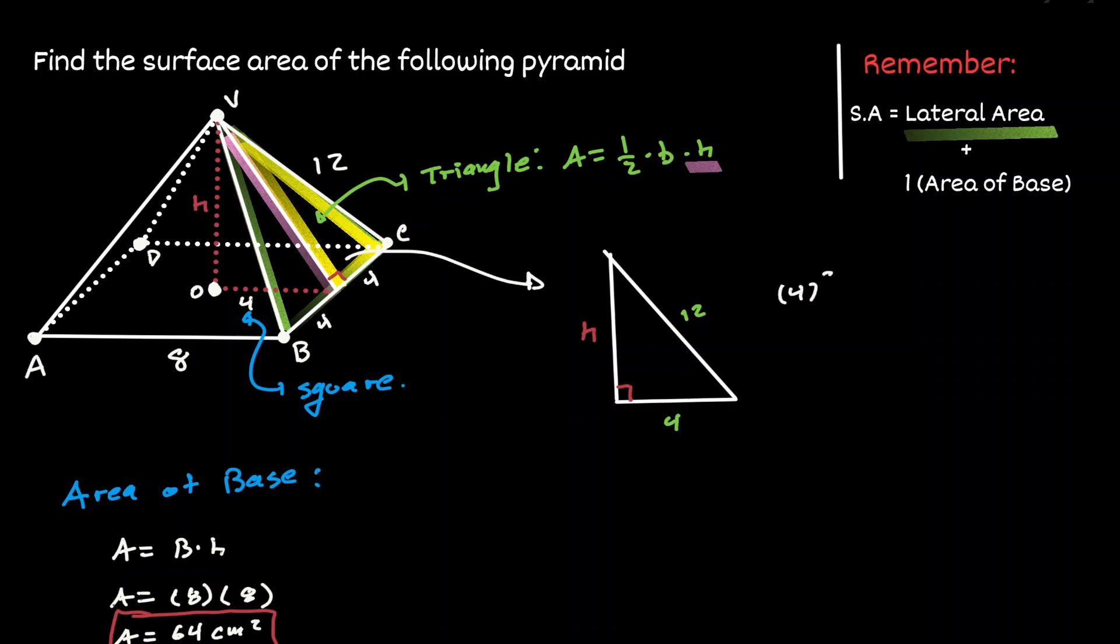4 square plus the height square equals 12 square. So we'll have 16 plus h square equals 144. Let's take away 16 from both sides.